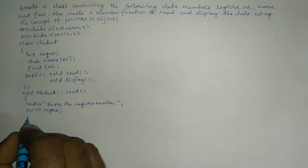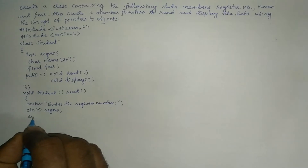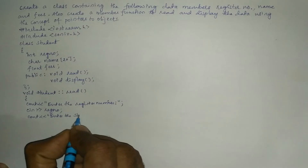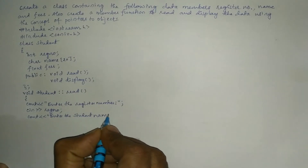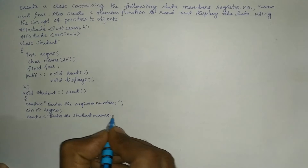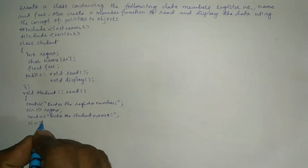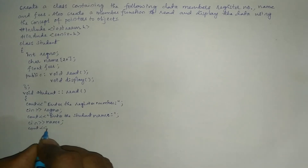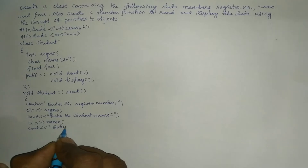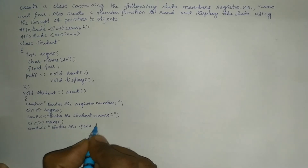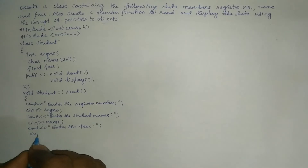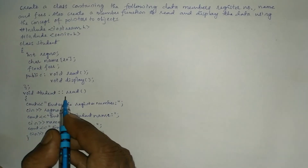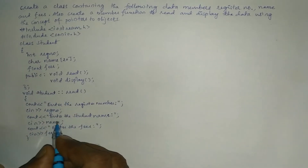Next we ask the user to enter the student name using cout, and accept it using cin into the name variable. Then we ask the user to enter the fees and accept it using cin into the fees variable. We close the read function with a curly closing brace.